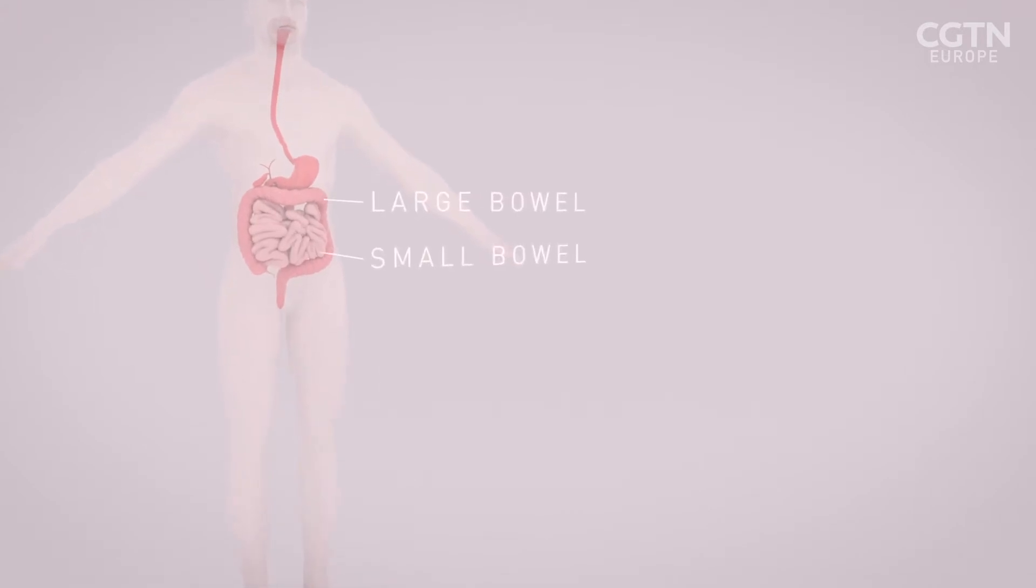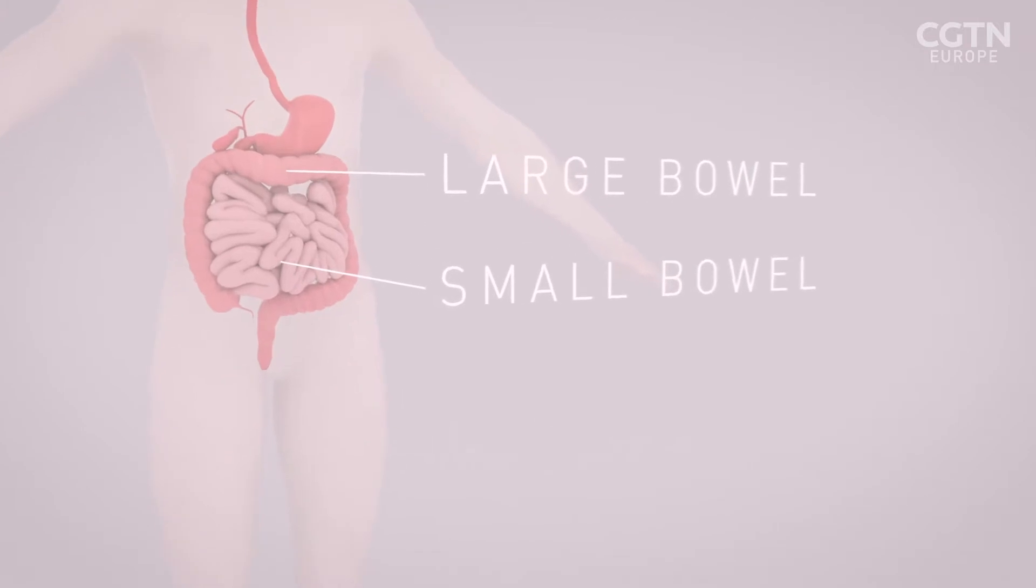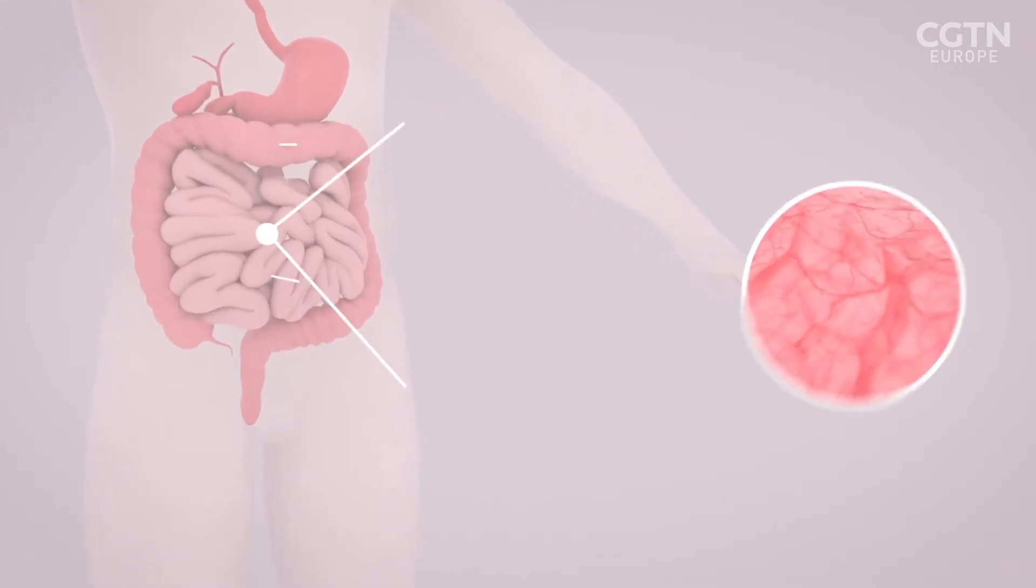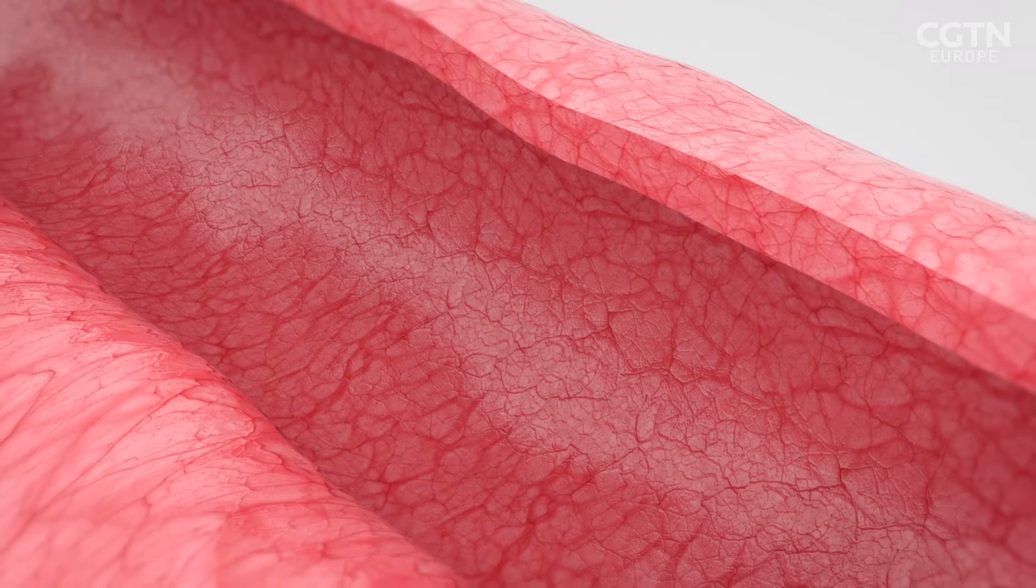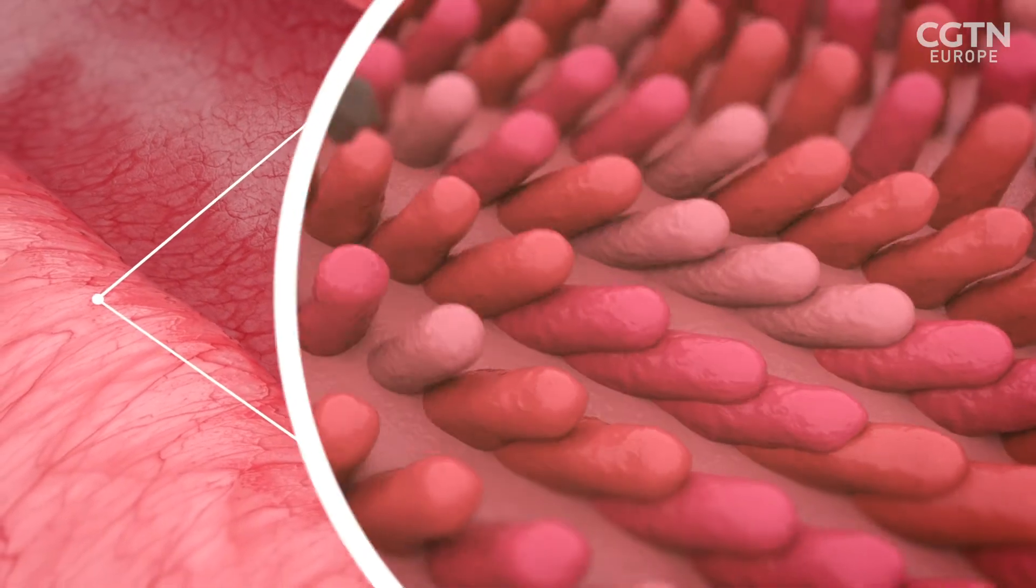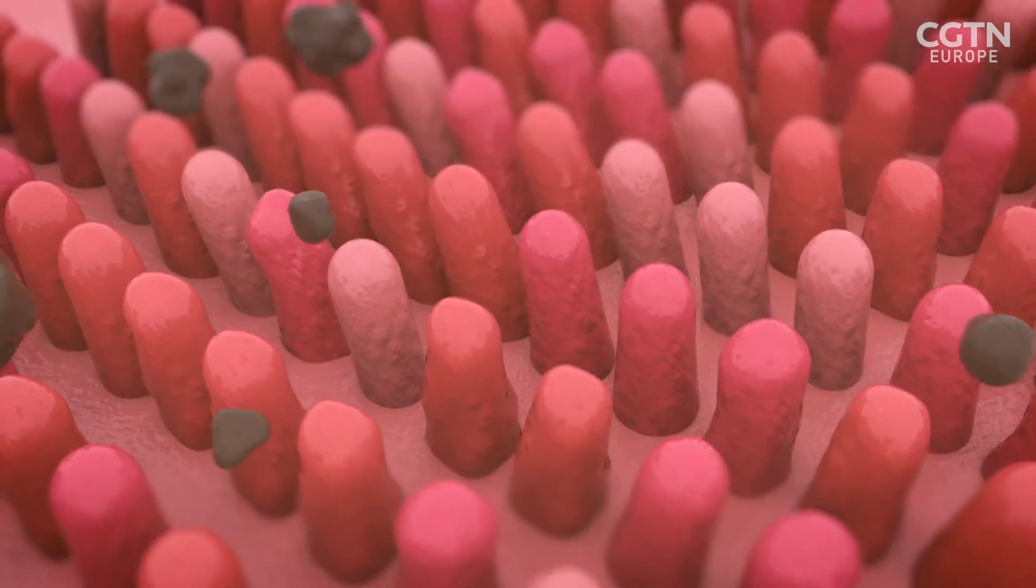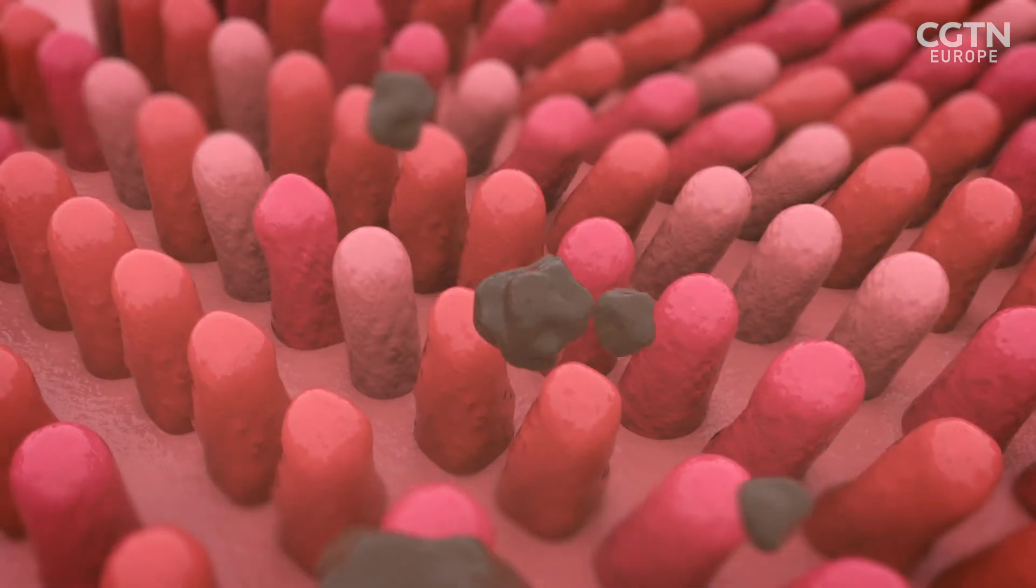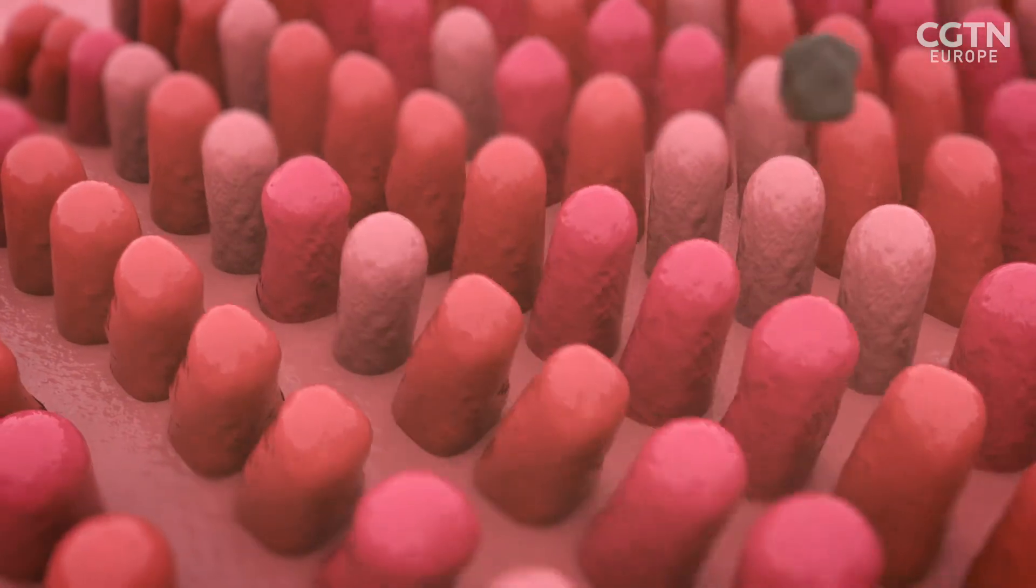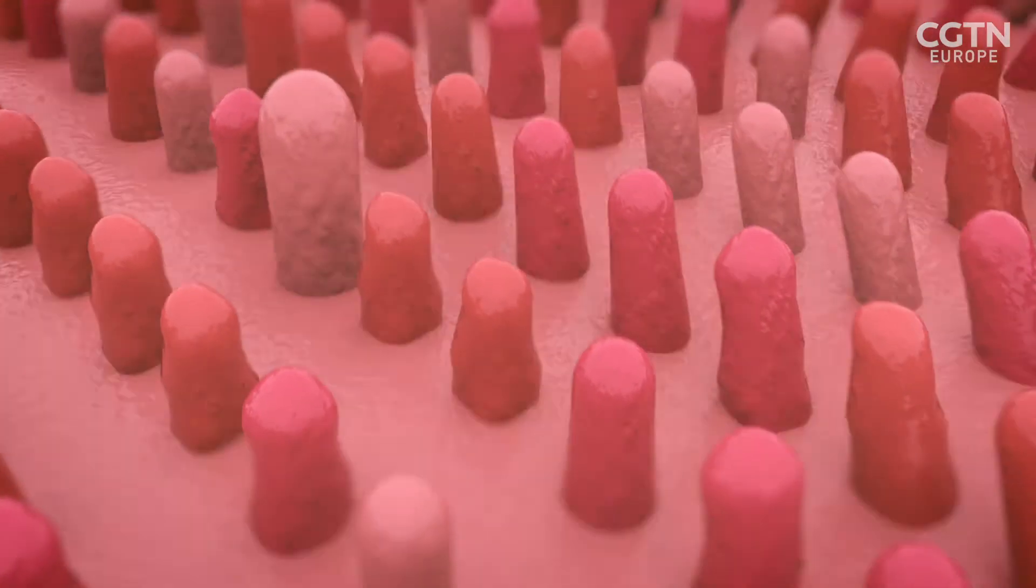The bowel is part of the digestive system. It's made up of the small bowel and the large bowel. The surface area or lining of the bowel is covered in specialist cell types that carry out food digestion and absorption. During this process, they're damaged and continually replaced every five days.